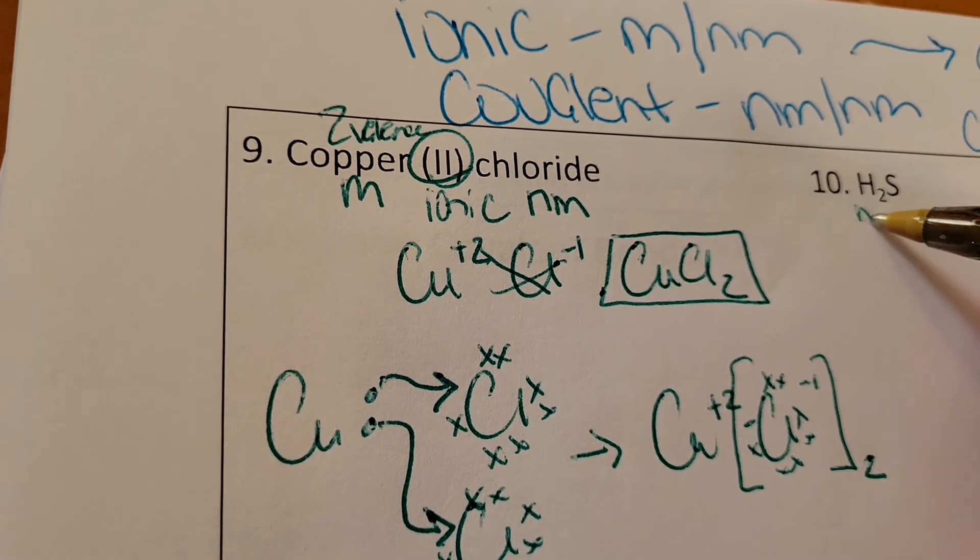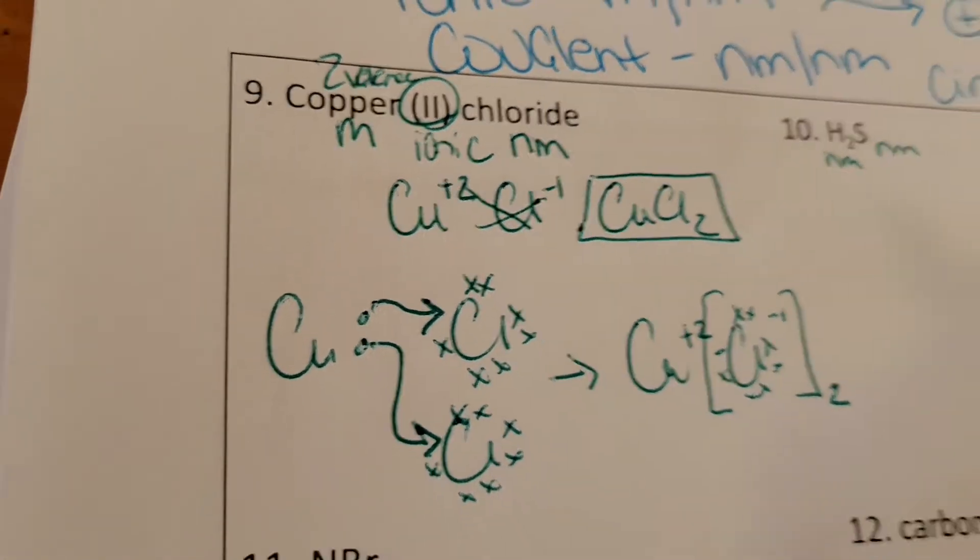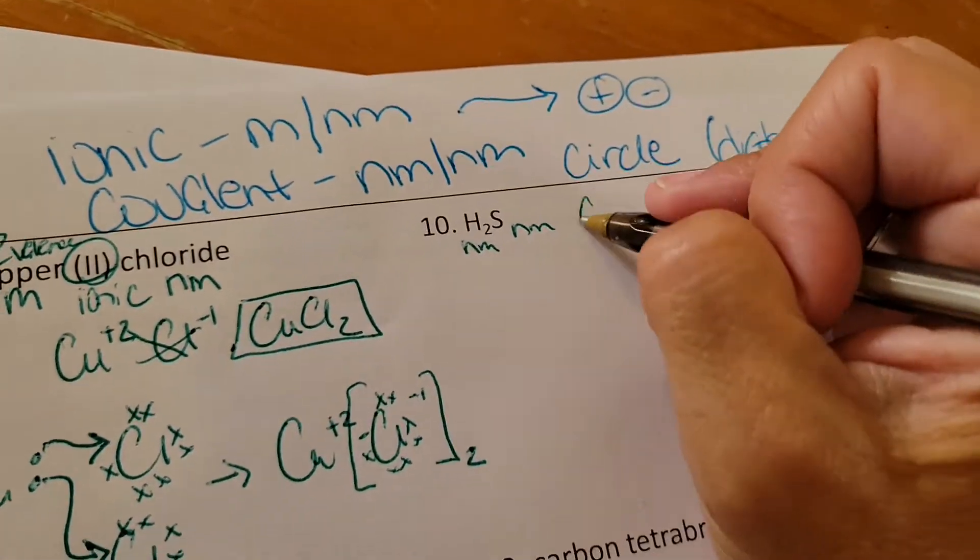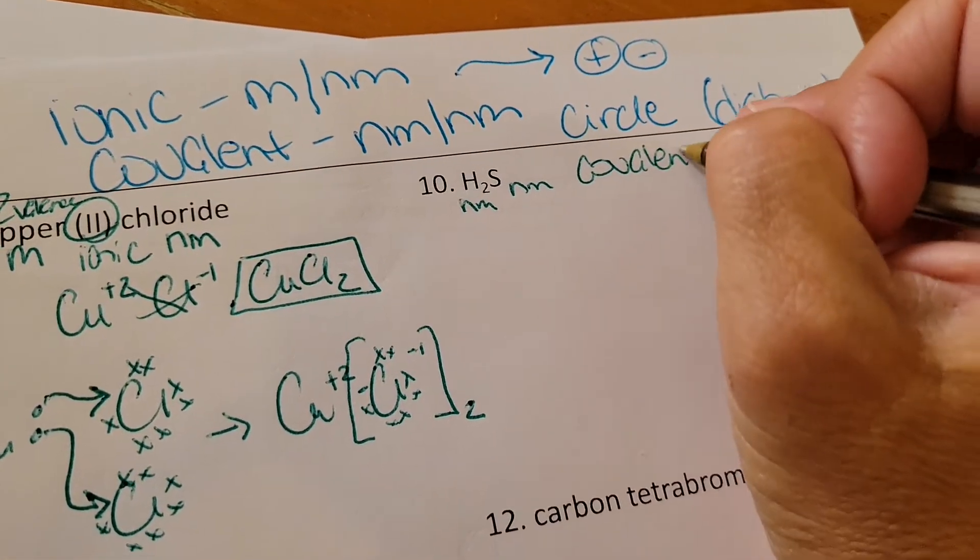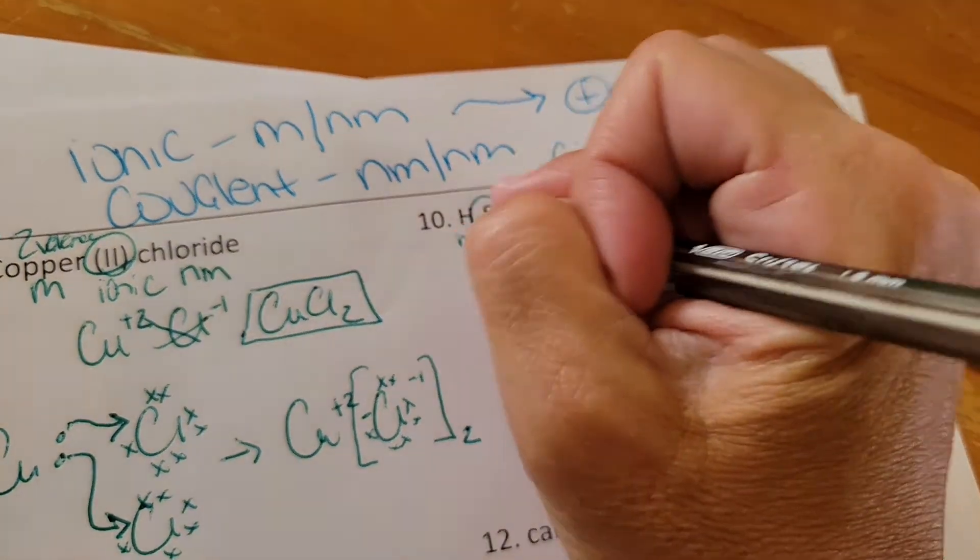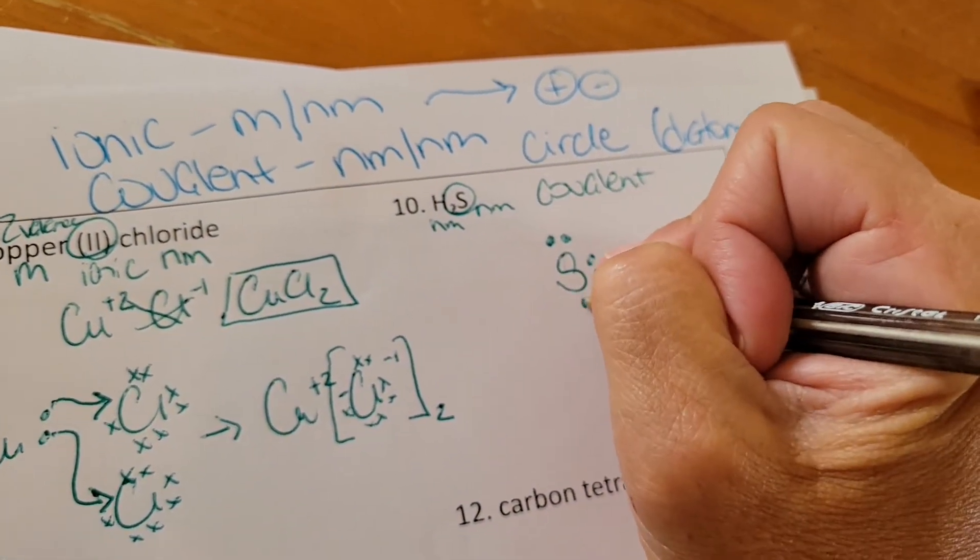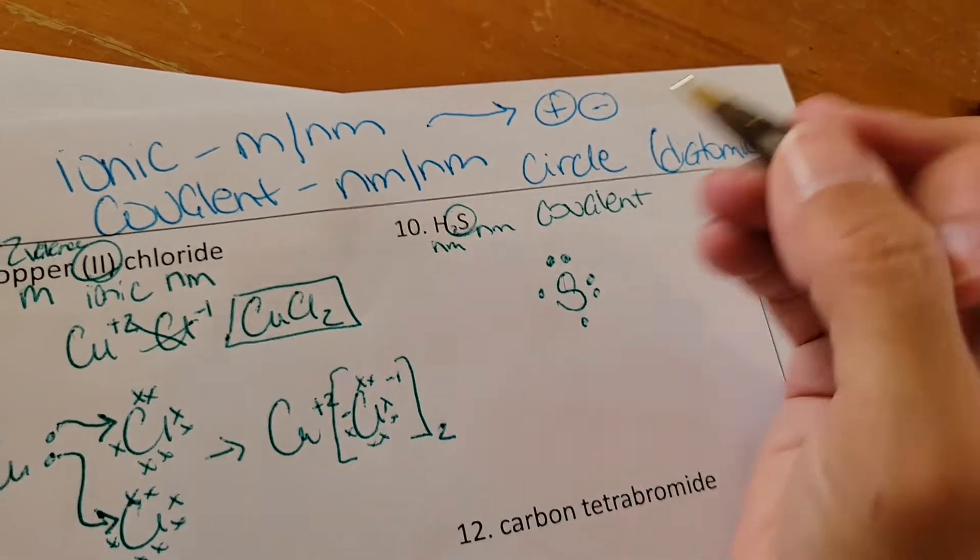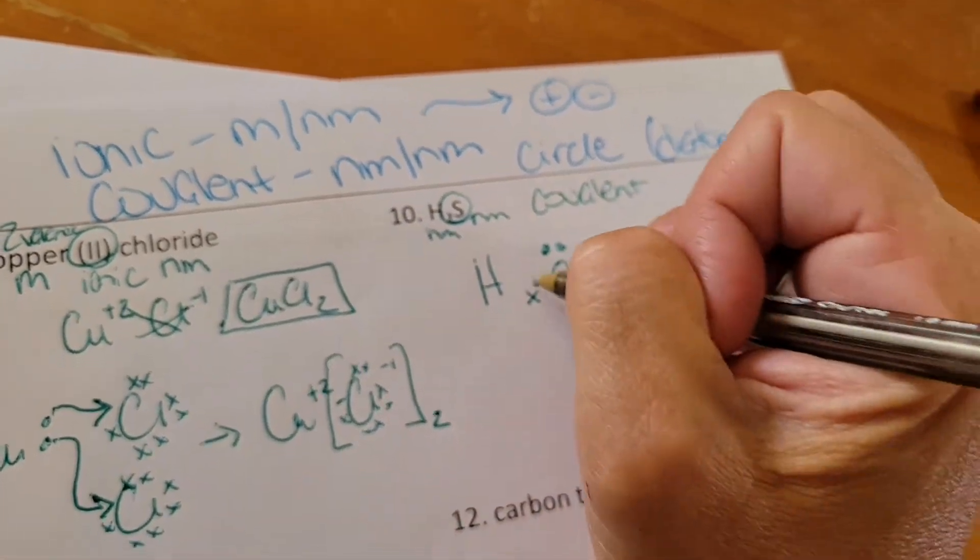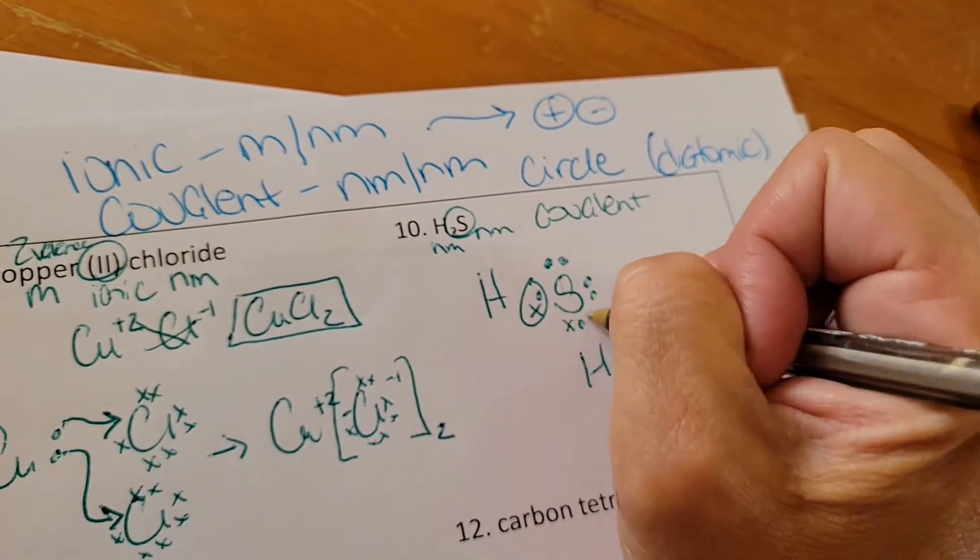H2S. Hydrogen is a non-metal, sulfur is a non-metal, so this one's going to be covalent. Sulfur has six valence electrons: one, two, three, four, five, six. Hydrogen has one. So one there and one there.